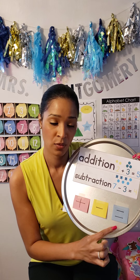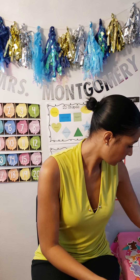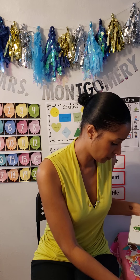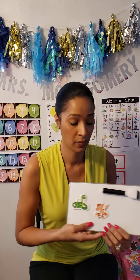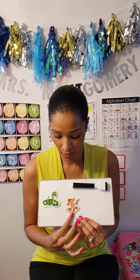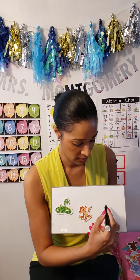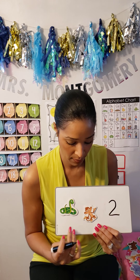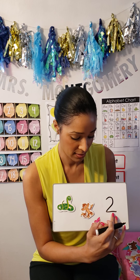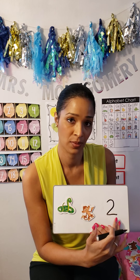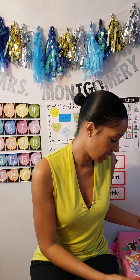An equal sign means it's the same. For example, here are two animals. Two is the same as this — two. It means it's the same. This is two and this is two. So equal means it's the same.